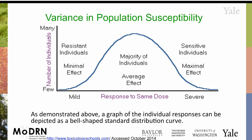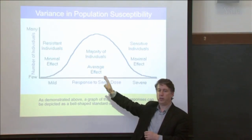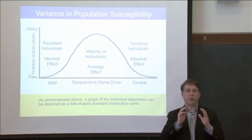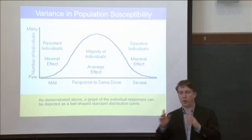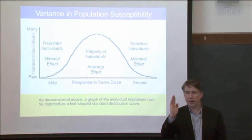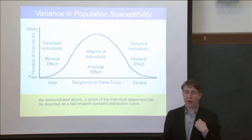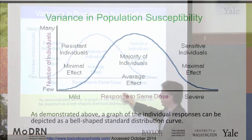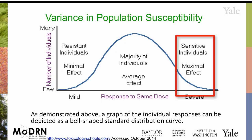This graph is for responses to the same dose. We're going to see dose-response curves that have changing dose and responses — this is all to the same dose. When we talk about dose-response curves, we're talking about percentage response. This is recognizing that at a particular given dose, you're going to respond to it differently than others — some people are particularly resistant, some particularly susceptible.